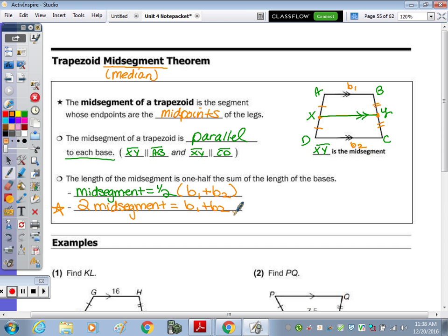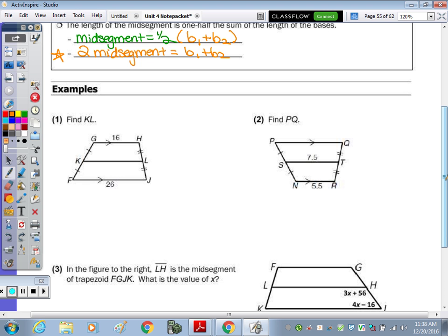Let's take a look at number 1. Number 1 says find the length of KL. If I want to find the length of KL, let's call that X. That segment is half of the sum of the bases, so it's the average of the two. It should fall right in the middle. The midsegment is half of 16 plus 26. What's 16 plus 26? 42.